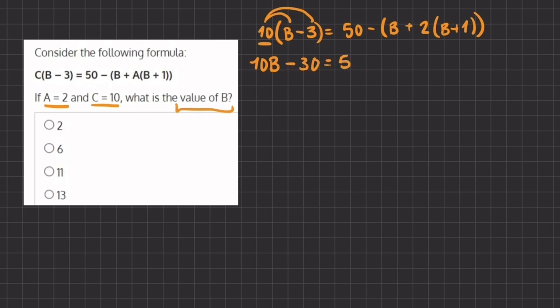Alright, now we have equals 50 minus, we'll open our parentheses, and here, we'll do the same, because we cannot simplify what's inside of the parentheses, we will distribute this 2 into the parentheses.